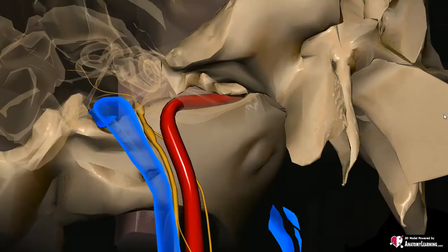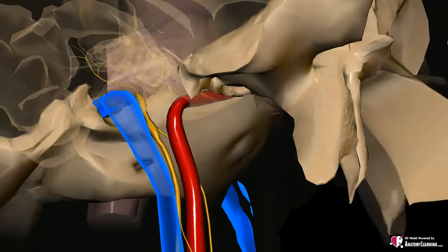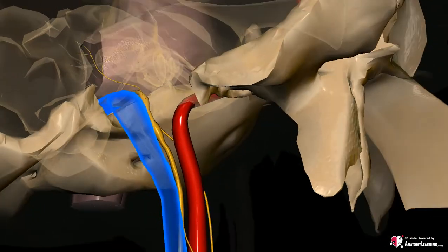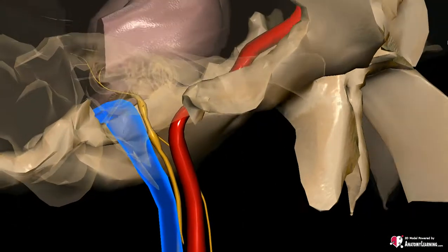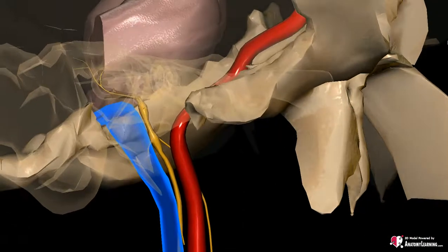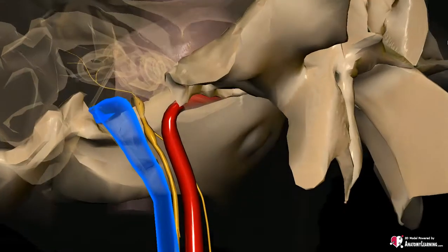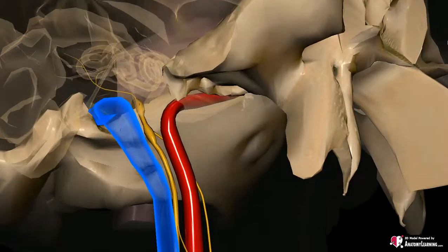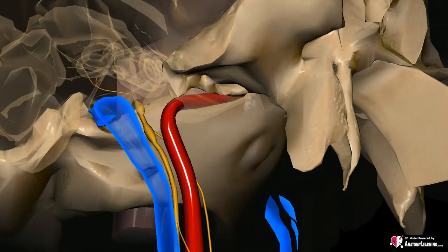As the vagal nerve passes through this foramen in order to leave the intracranial space, two sensory ganglia can be noted: the superior, or jugular ganglion, and the inferior, or nodose ganglion. Continuing its course, the vagal nerve runs in between the carotid artery and the internal jugular vein.